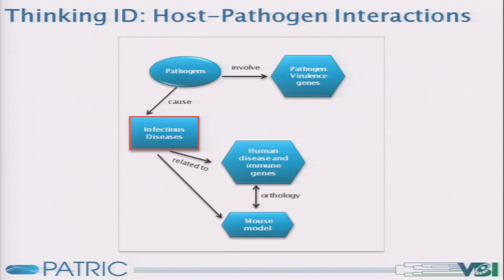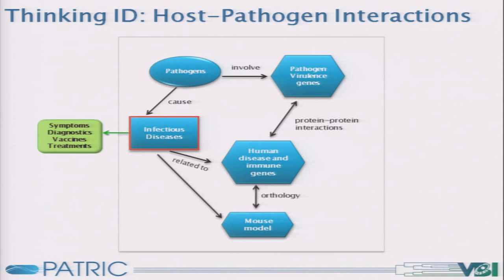But there are relationships between these human diseases and, for example, mouse models, and even fly models or worm models. And then there are the protein-protein interactions, which in many cases are the molecular mechanisms that are mediating the outcome of this interaction as either disease, non-disease, or something in between.